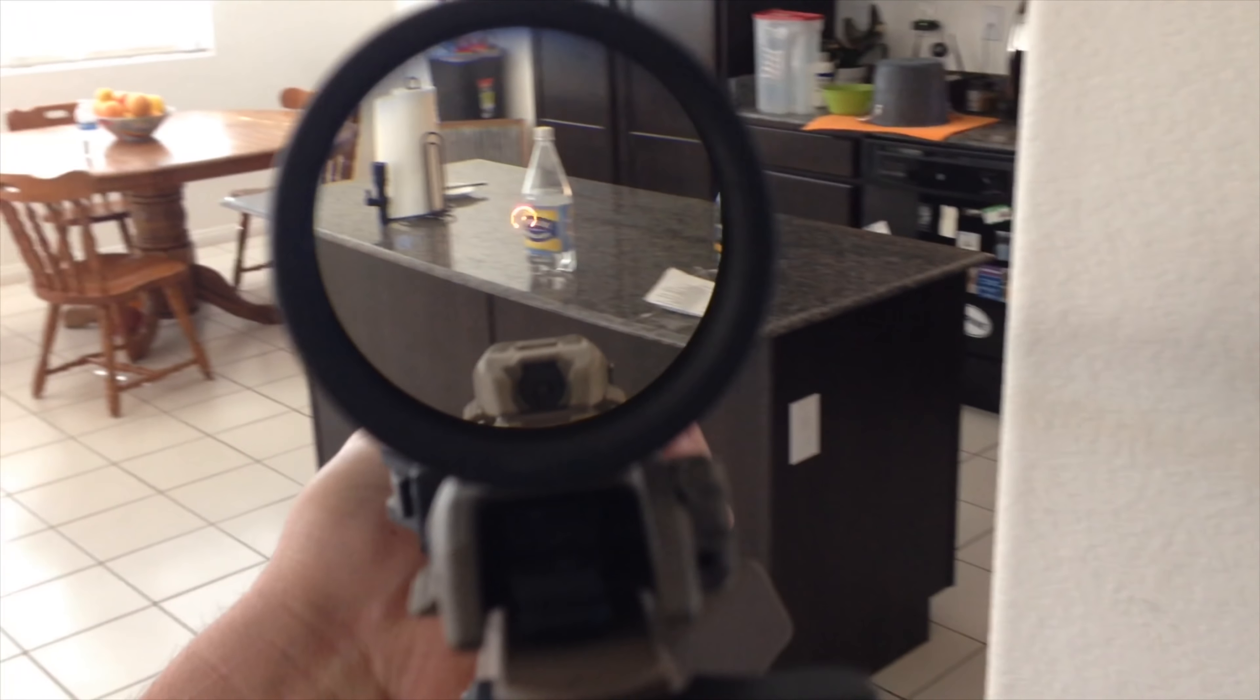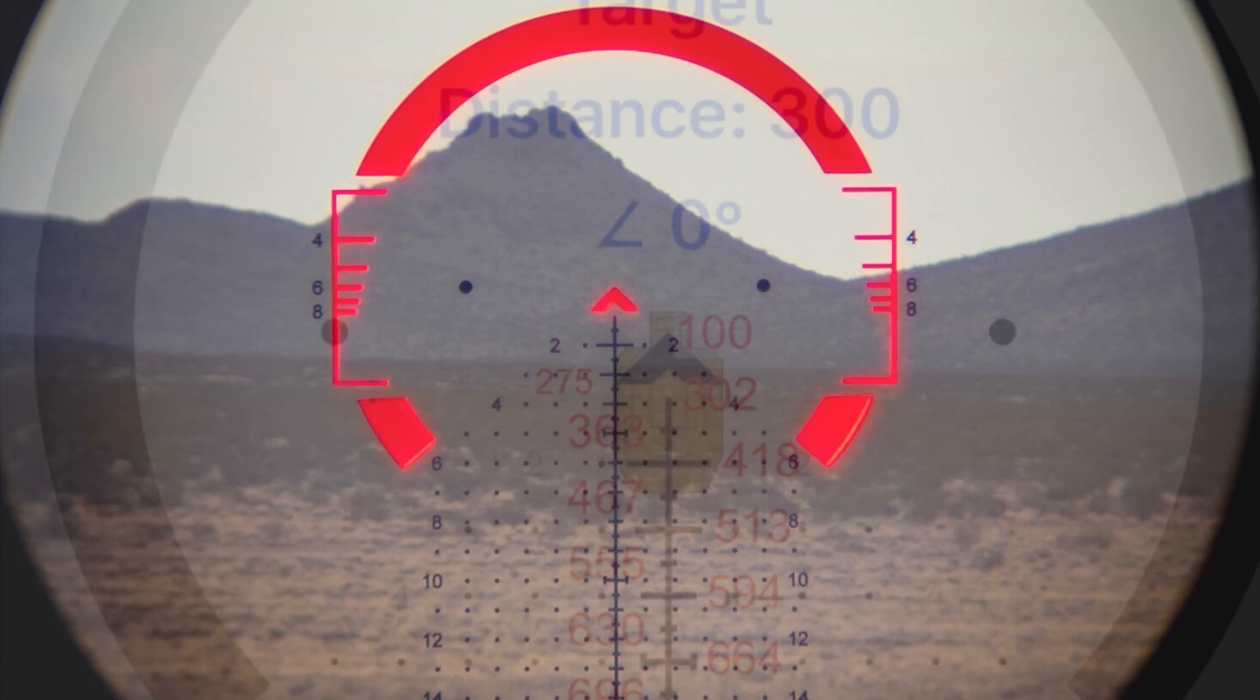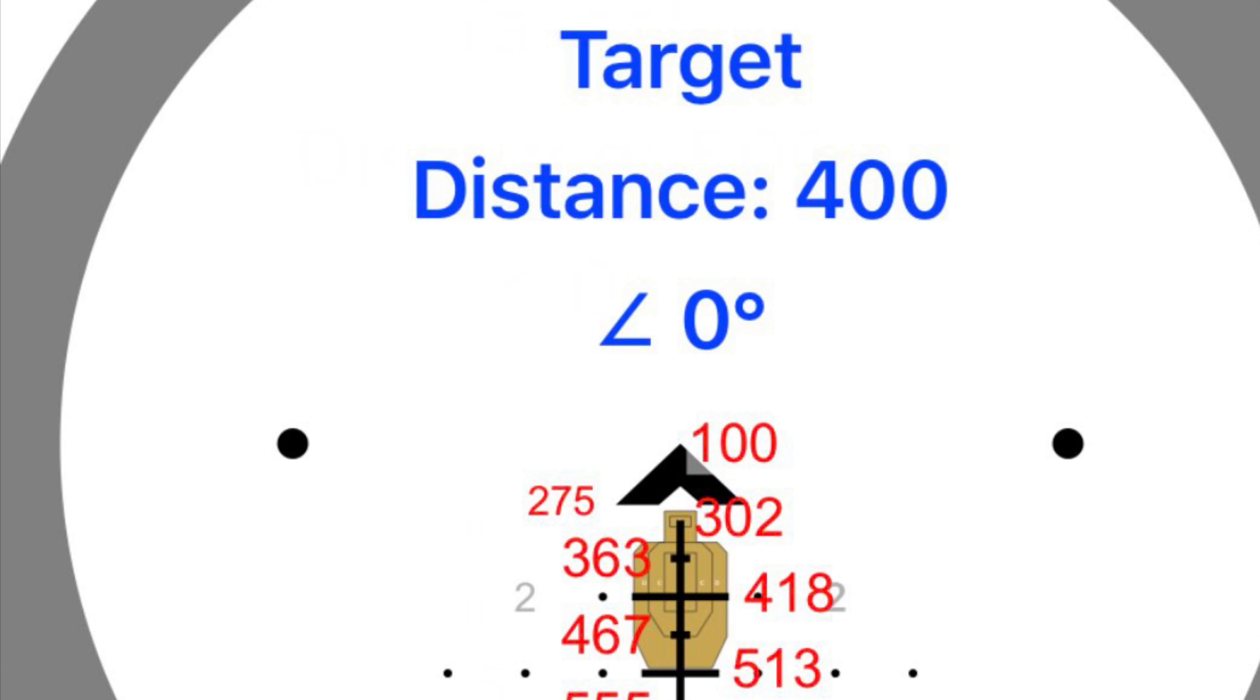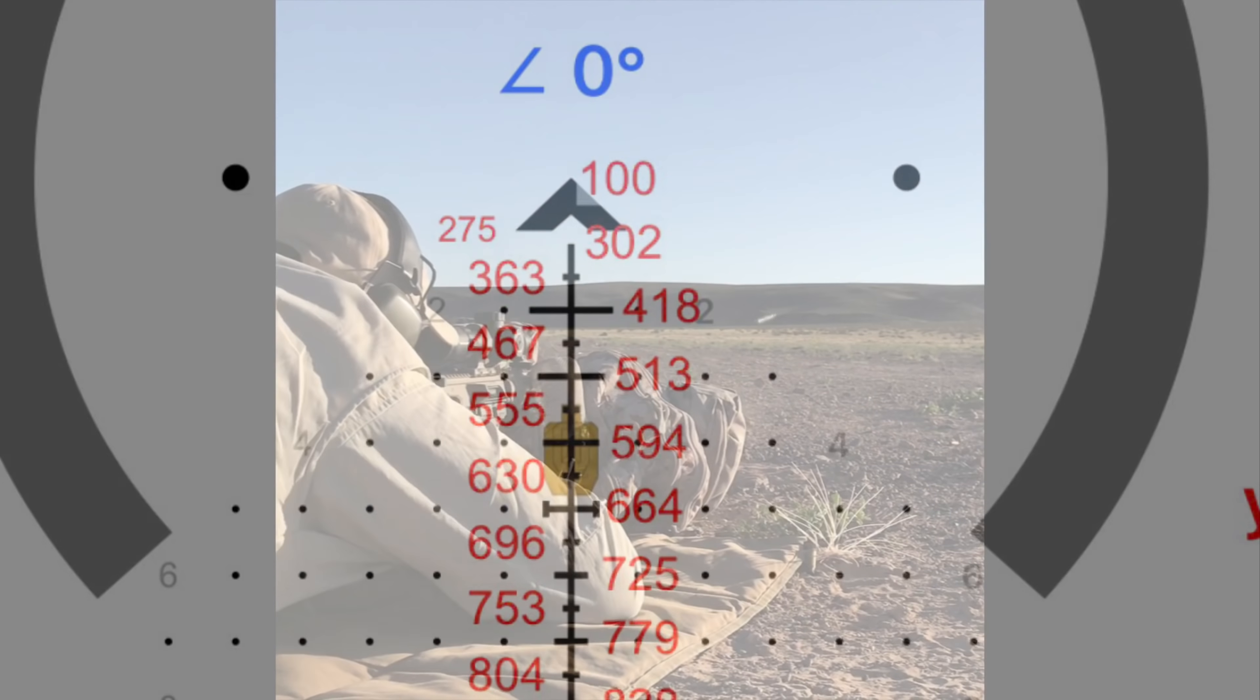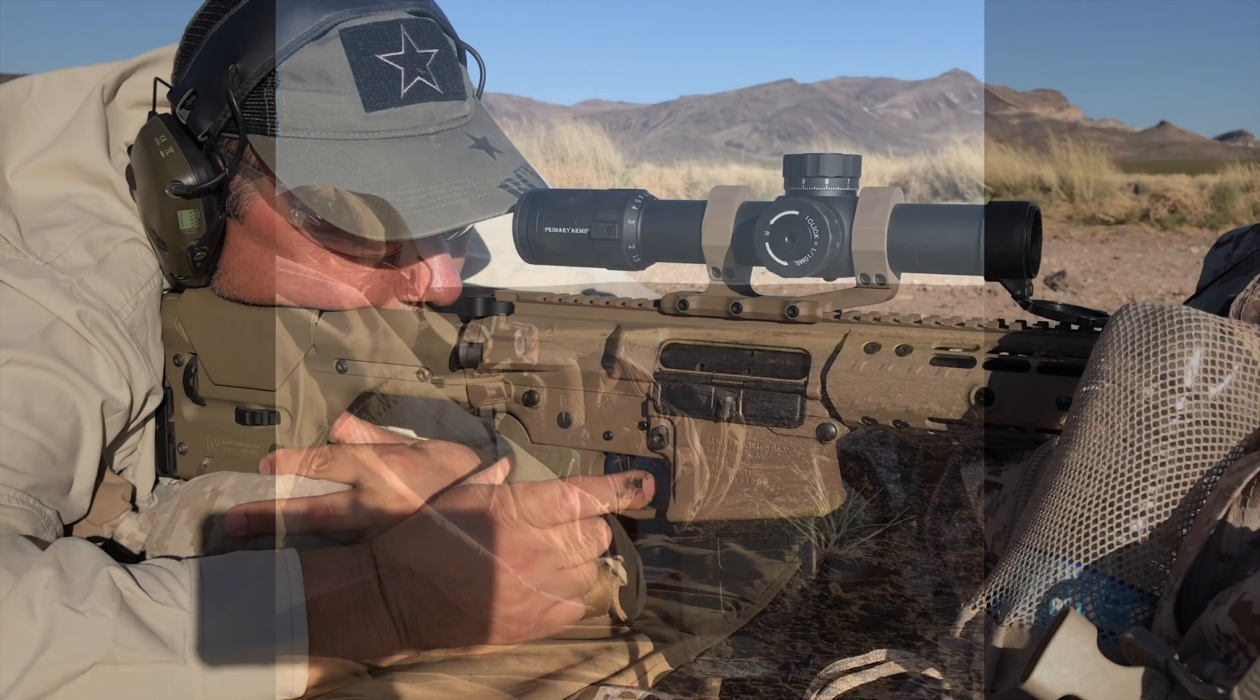As you zoom in, you'll get a full-out grid in mills. It's not only a mill reticle, but it has BDC auto range in it as well, and we'll get into that detail in a second.